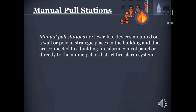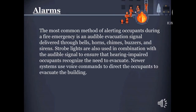Manual pull stations are lever-like devices mounted on a wall or pole in strategic places in the building, connected to a building fire alarm control panel or directly to the municipal fire alarm system. The most common method of alerting occupants during a fire emergency is an audible evacuation signal delivered through bells, horns, chimes, buzzers, and sirens. Strobe lights are also used in combination with the audible signal to ensure that hearing-impaired occupants recognize the need to evacuate. Newer systems use voice commands to direct occupants to evacuate the building.